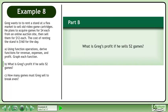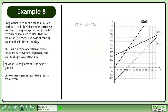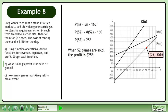Now we'll move on to part B. What is Greg's profit if he sells 52 games? Begin with the profit function: P(n) = 8n - 160. If Greg sells 52 games, replace the function input n with 52. When 52 games are sold, the profit is $256.